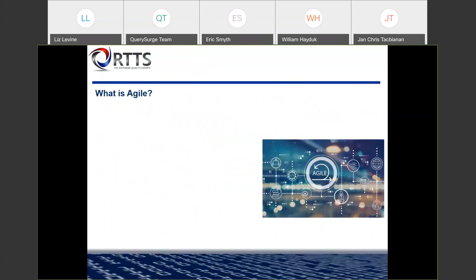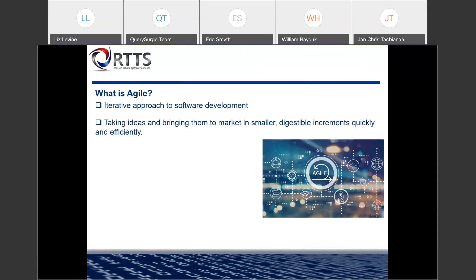Let's first talk about what is Agile. I'm pretty sure most of us are familiar, but let's do a quick refresher. Agile is an iterative approach to software development. Most of this summary is going to be contrasting to a traditional waterfall model where you'd have your requirements and start your development from beginning to end. Agile takes the concept of taking ideas and bringing them to market in smaller digestible increments quickly and efficiently. Agile also considers responding and adapting to change, so instead of taking your requirements from the very beginning, you're always responding and adapting to changes in requirements or scope.